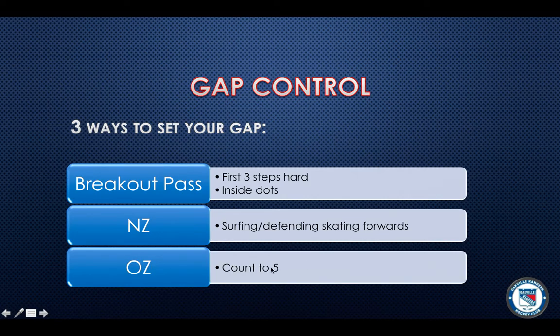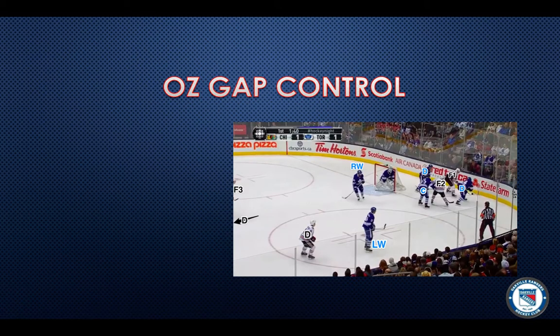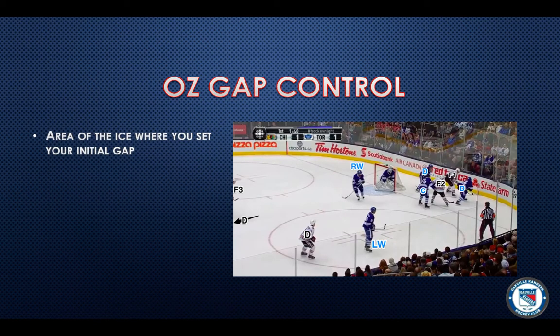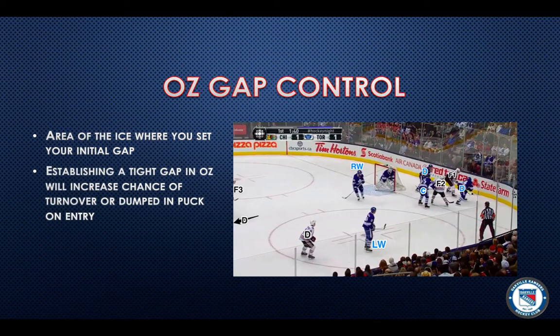It's a kind of little mentality — it's a count to five mentality, and I'll explain that going forward. So Ozone Gap Control: it's an area of the ice where you set your initial gap. If you have a tight gap here, the likelihood of creating a turnover or a dump puck is really high. This is where your initial gap is set in the offensive zone.